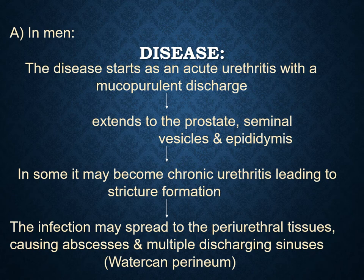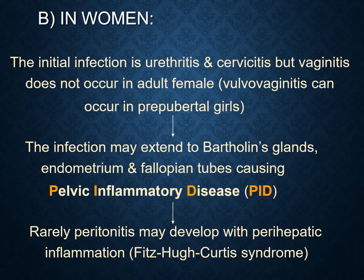In women, the initial infection starts with urethritis and cervicitis, that is inflammation of the urethra and cervical area. Vaginitis doesn't occur in adult females, but vulvovaginitis can occur in pre-pubertal girls. After that, infection may extend to the Bartholin glands, then to the endometrium, and finally to the fallopian tubes, leading to pelvic inflammatory disease and rarely peritonitis.